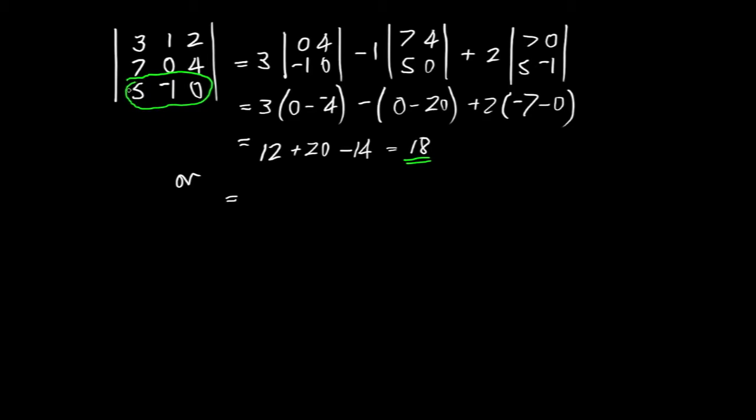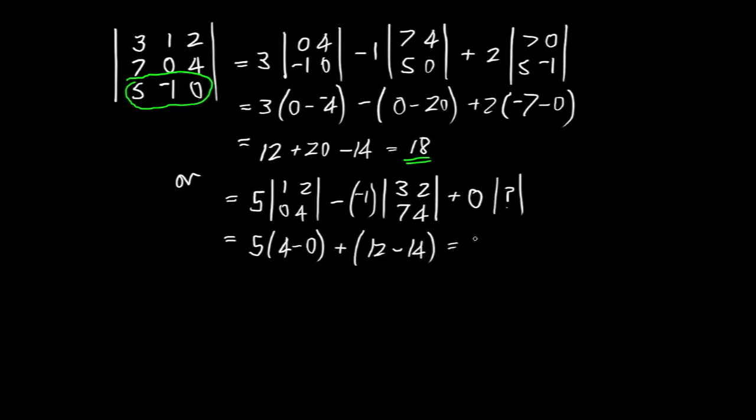But we could have done it in a different way. Let's say we went along this bottom row. Then it will be 5 and I'll be left with 1, 2, 0, 4 for my mini-determinant. And the next element along, a minus sign, and it was a minus number anyway: minus, minus 1. That's going to be 3, 2, 7, 4. What about the third element here? Well, we actually have a 0, plus 0 times some determinant. I don't even care what that is, because it's been multiplied by 0. That's the beauty of it. So I've got 5 into 4 minus 0, and then 4, 3 is 12 minus 14. That's going to give us 20 minus 2 is 18. Same answer as before.